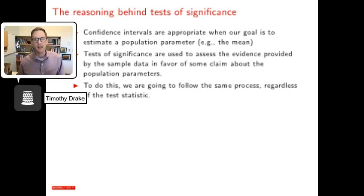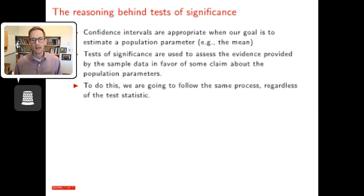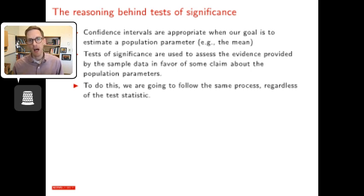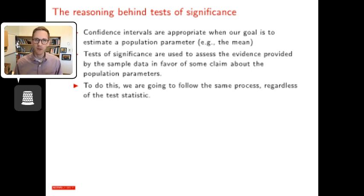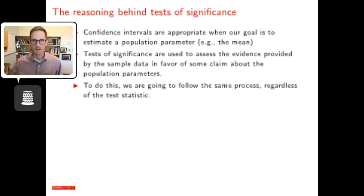If our goal is to estimate a population parameter such as the mean, confidence intervals are a good way to do that. Tests of significance are used to assess the evidence provided by sample data in favor of some claim about the population parameters. Regardless of the test statistic, we'll go through this same process each time.